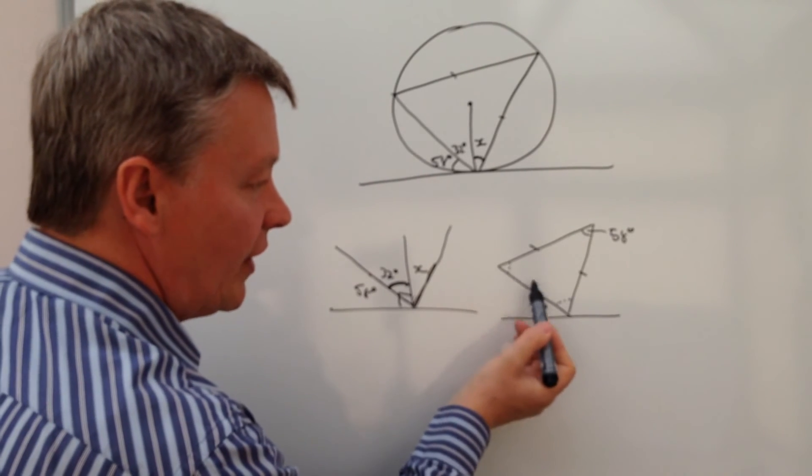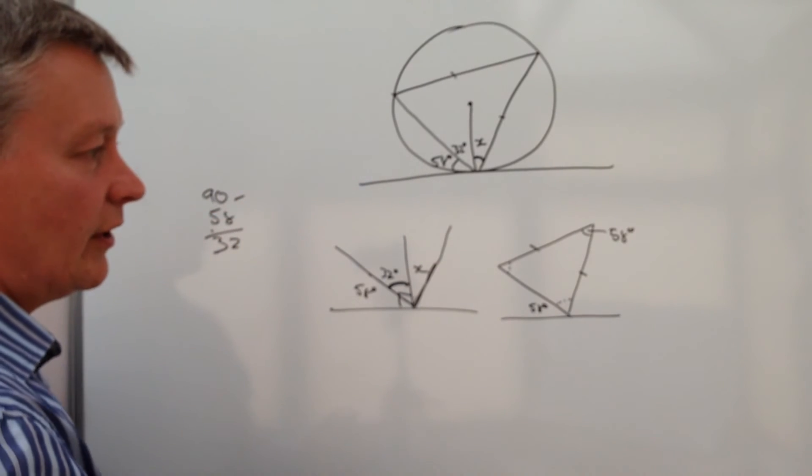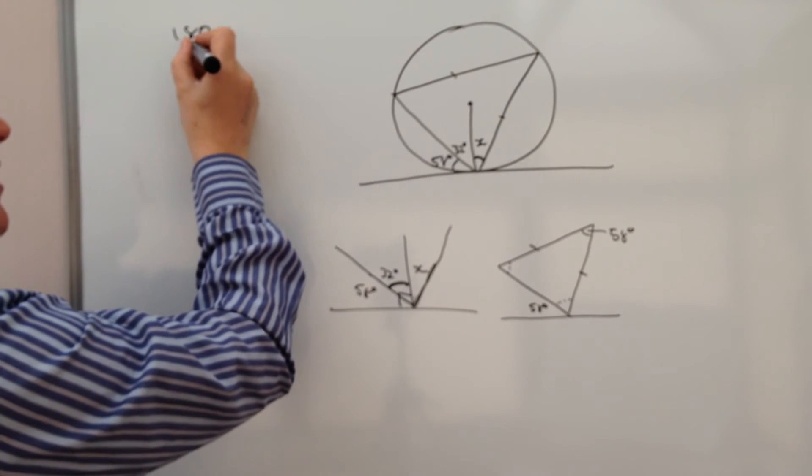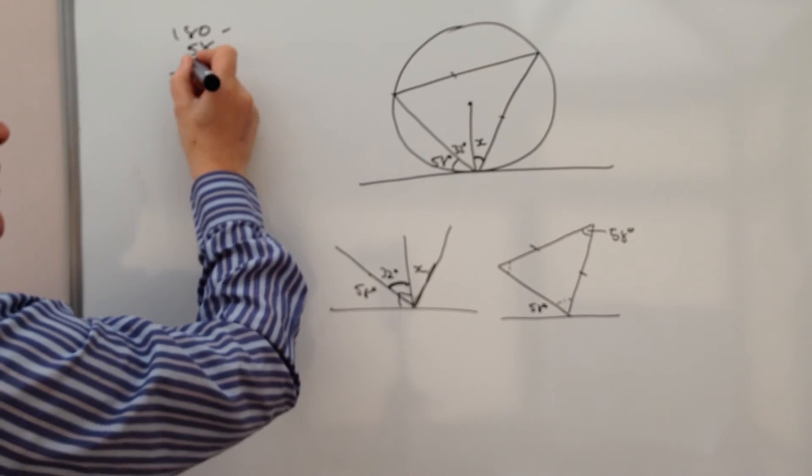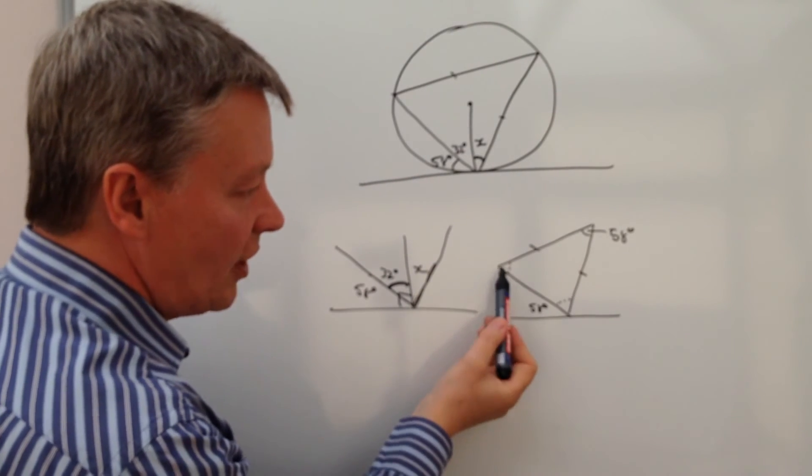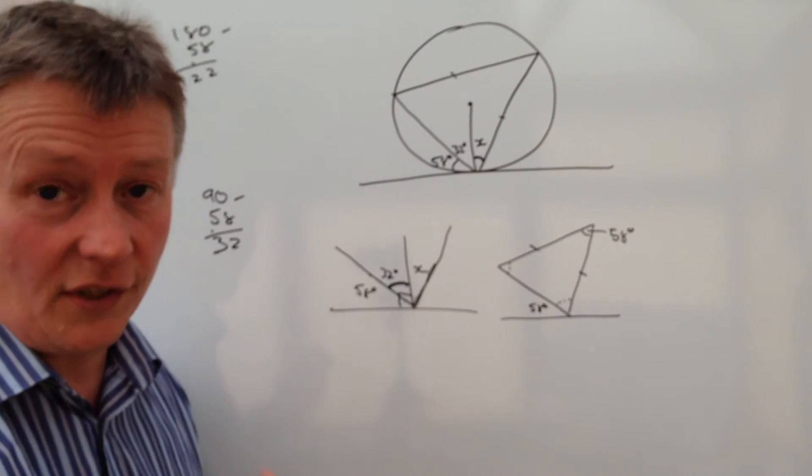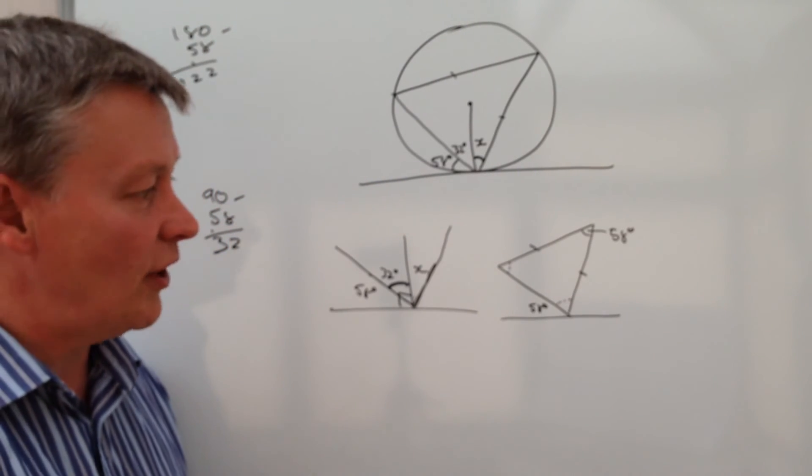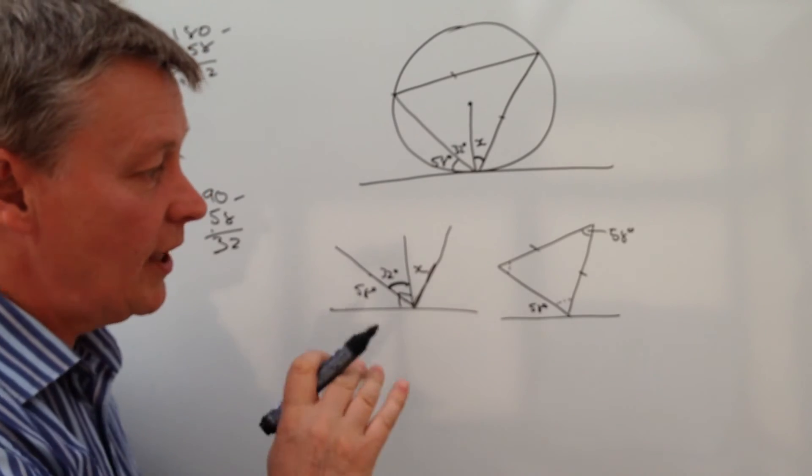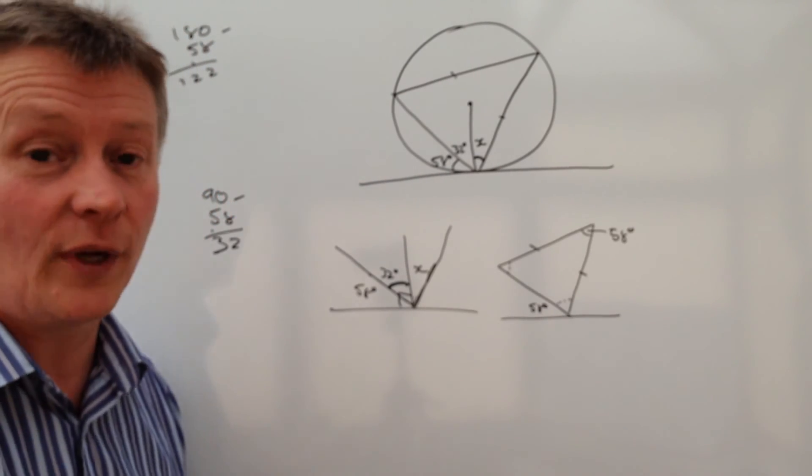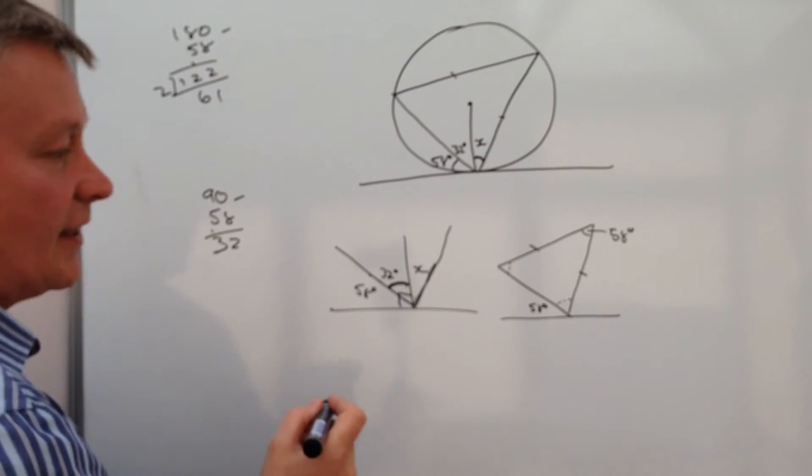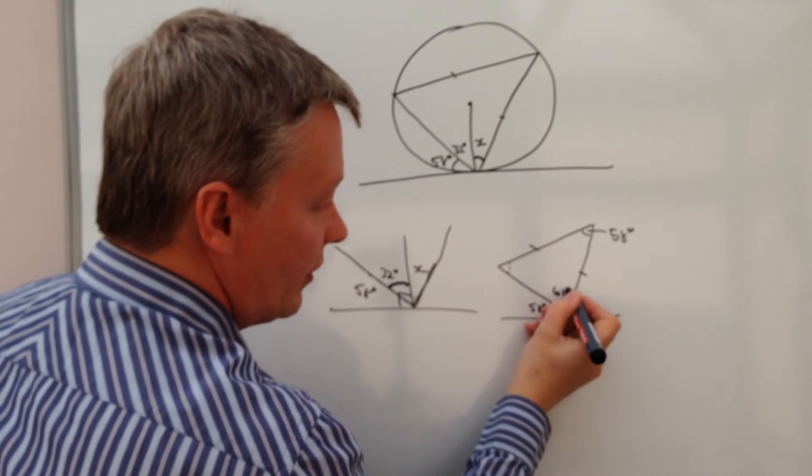So to work out the value of this angle and this angle, we've got 180 minus 58 is going to give us 122 degrees. So in other words, the total of these two angles, because it's an isosceles triangle, is 122 degrees, which means that they're both the same, which means that both of those will be half of 122. So 122 divided by 2 means that this angle here is 61 degrees.